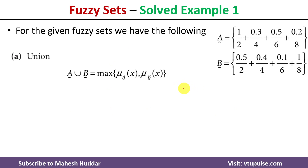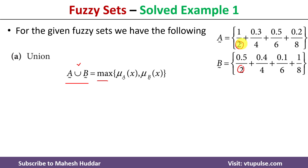We will start with the first operation: union. The union of two fuzzy sets is denoted by the union symbol. The union is always equivalent to the maximum of the degree of membership of an element x in fuzzy set A and the degree of membership of element x in fuzzy set B. We check the degree of membership in both sets and take the maximum. For element 2, the degree of membership in A is 1 and in B is 0.5. Between these two, 1 is maximum.